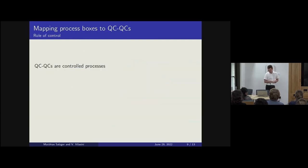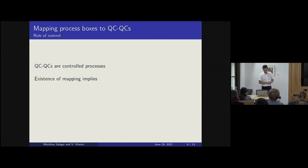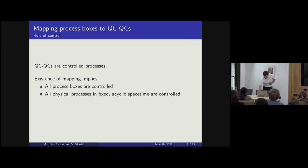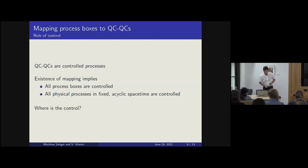For the other direction, I'll give the intuition of why such a mapping might exist. If you still remember the full name of QCQCs — quantum circuits with quantum control of causal order — they are controlled processes. If such a mapping from process boxes to QCQCs exists, this would imply that all process boxes are controlled, and that all physical processes in a fixed acyclic spacetime are controlled. There's nothing in this framework or in the real world that immediately suggests this. So we can ask: where is the control? Two assumptions were made: one is if you have a classical background spacetime — not quantum spacetimes, just a classical background.